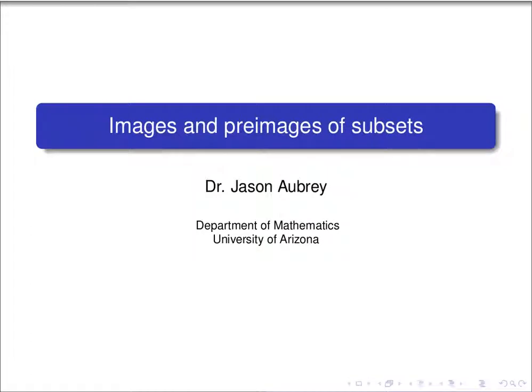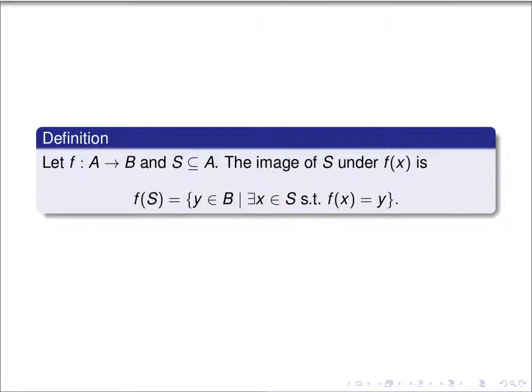In this video, we want to discuss images and pre-images of subsets. Let's recall a couple definitions first. If f is a function from A to B and S is a subset of A, then the image of S under the function f is defined to be the set of all y in B such that there exists an x in S such that f of x is equal to y.